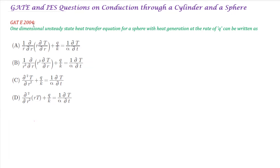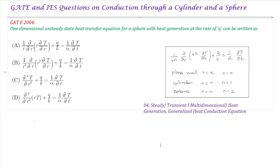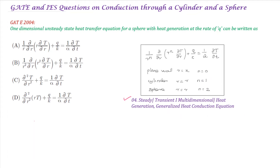The first question is Gate 2004, one mark: Unsteady heat transfer equation with heat generation. In the previous video, specifically the fourth video, we discussed the generalised equation for cylinder, sphere, and plane wall. The answer for the sphere is: 1/R² × d²T/dR² + Q/K = (1/α) × dT/dt. Answer B is correct. This equation for the plane wall or the sphere is very straightforward.